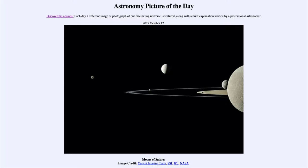That is apod.nasa.gov/apod. Today's picture for October 17th, 2019 is titled Moons of Saturn. So what do we see here? Well, not all of the moons of Saturn, which now number over 80.